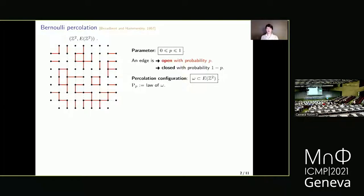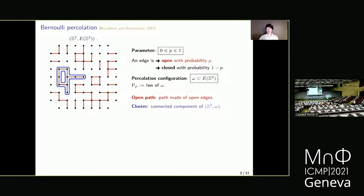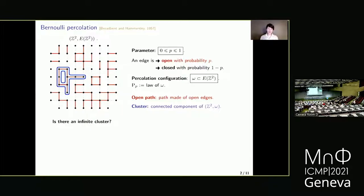We denote by P_P the law of omega, the random subgraph. Open paths are paths made of open edges. Clusters are connected components of the graph omega — if you inject water at a vertex, the water will invade all of the corresponding cluster. What we are interested in is the emergence of macroscopic structures. A natural question is: is there an infinite cluster on the resulting graph omega? The answer depends on the parameter P and gives rise to a phase transition.